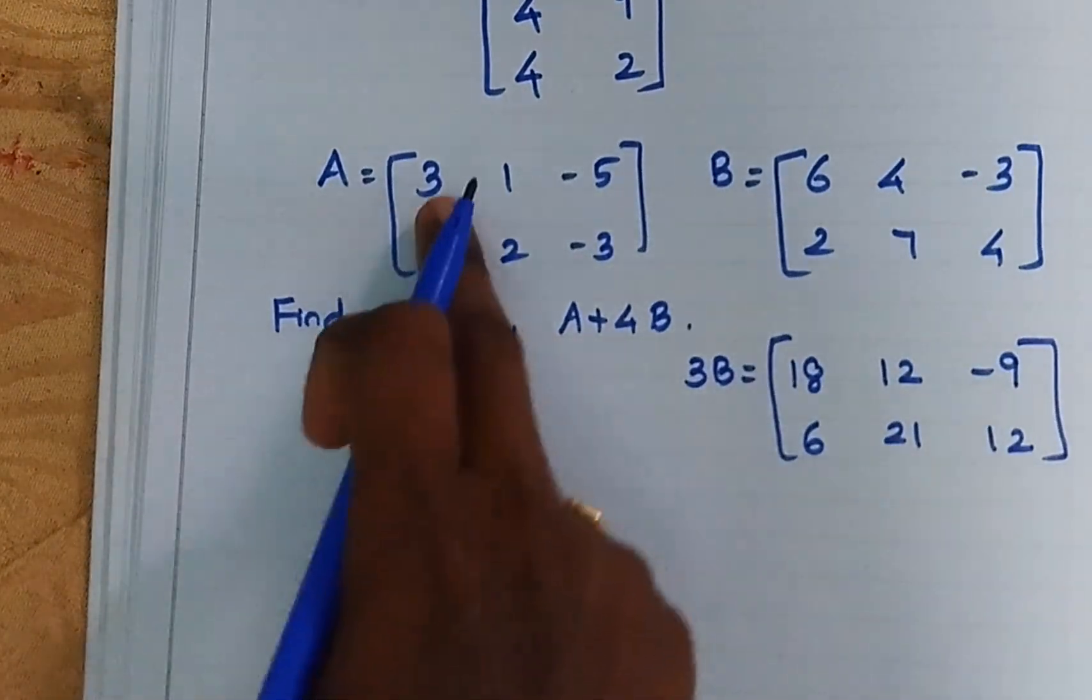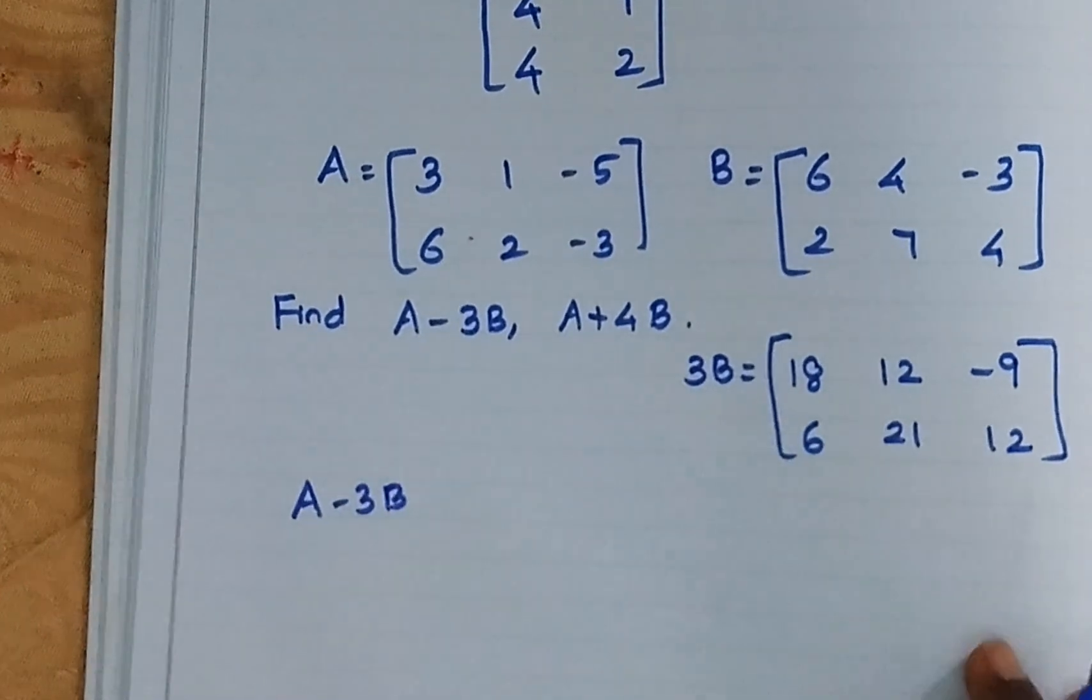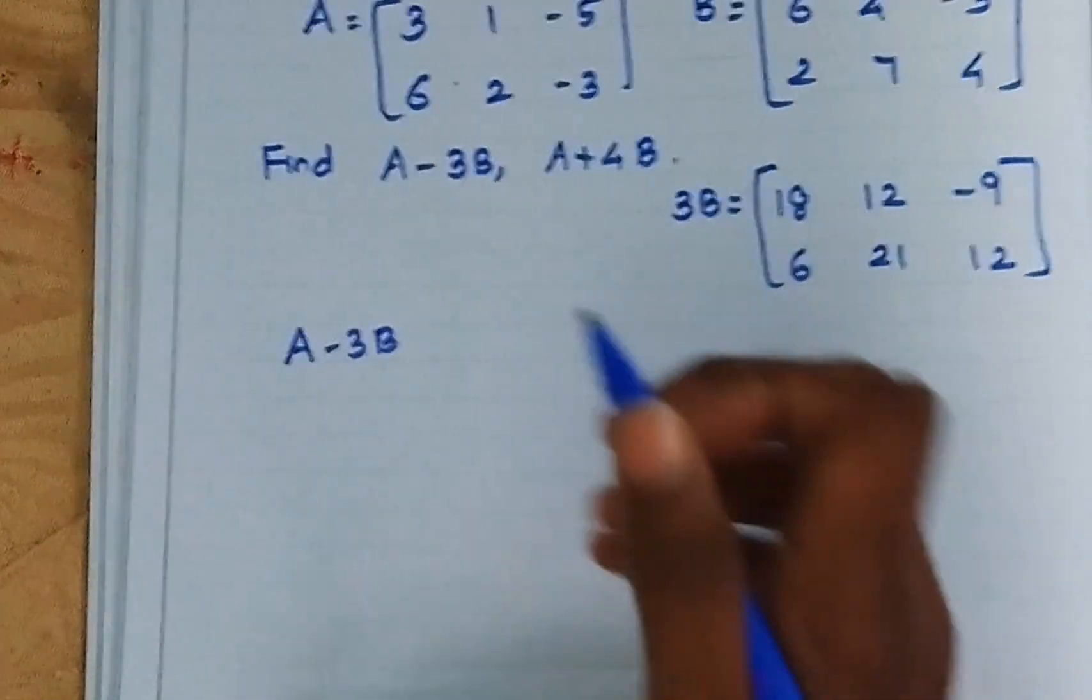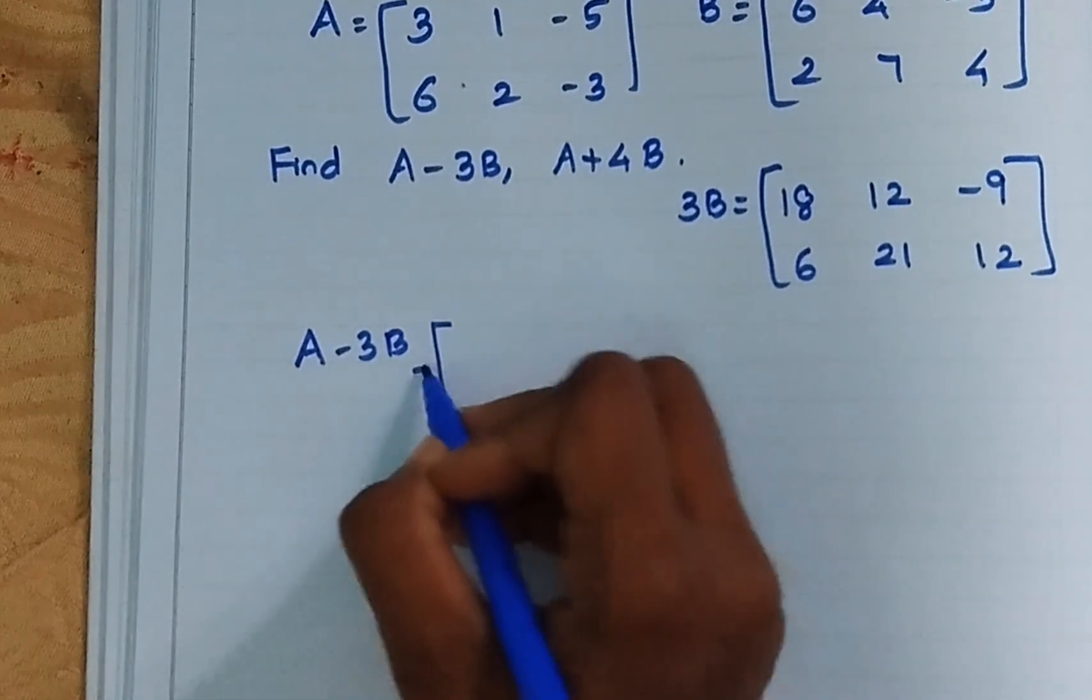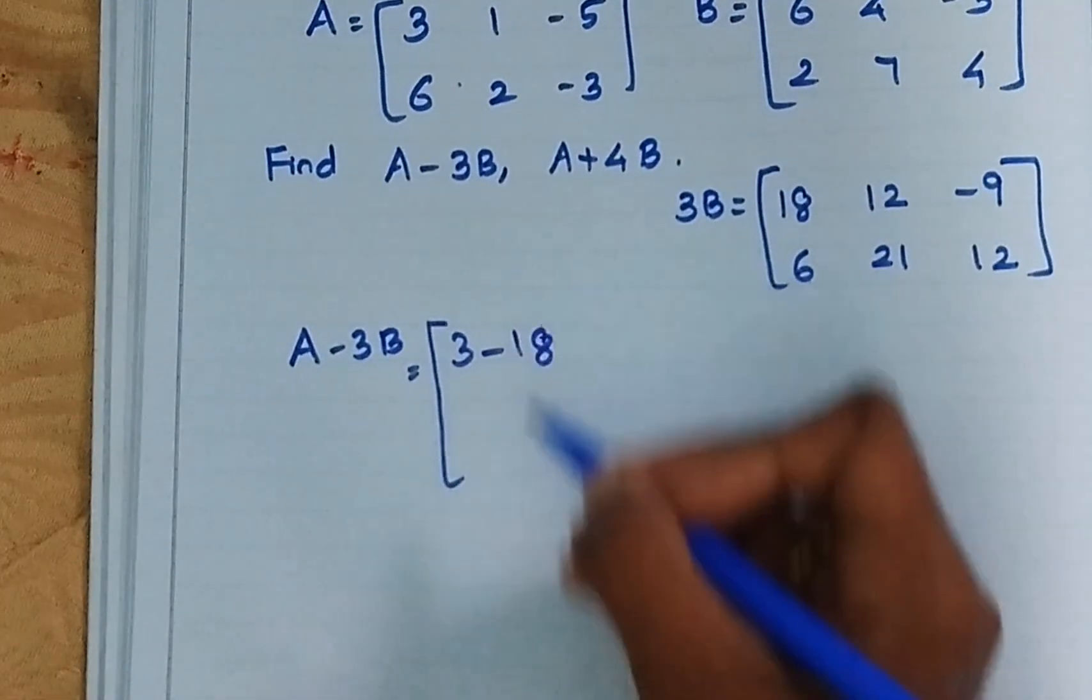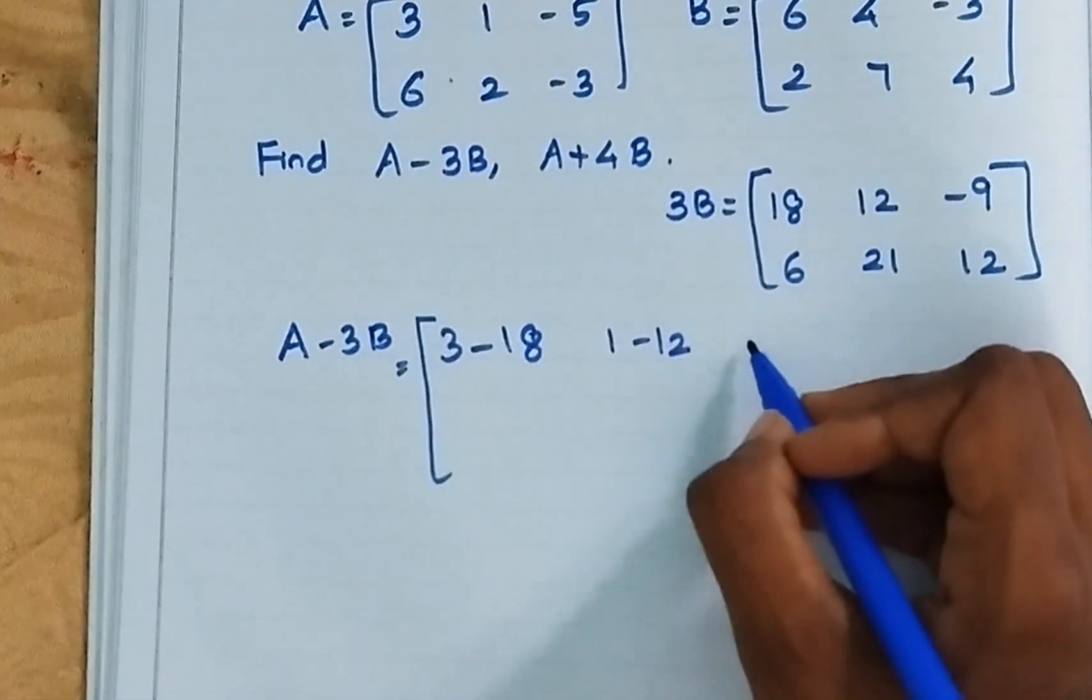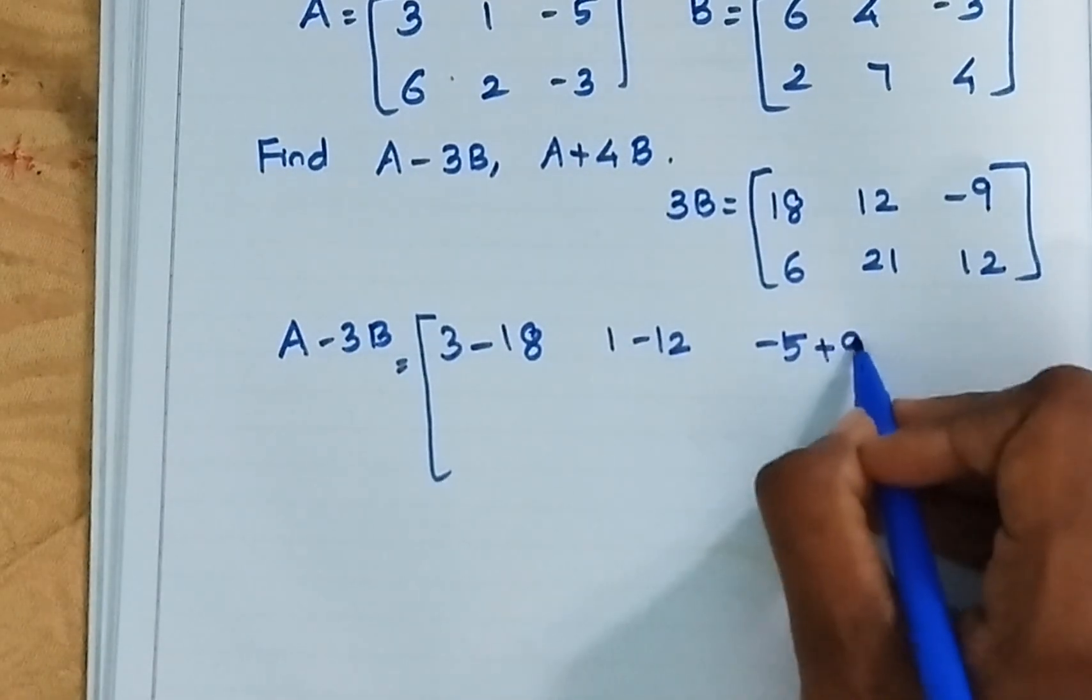Now A is there, 3B is ready. So that is A minus 3B. We are going to subtract A and 3B. So first element is A. That is 3 minus 18. Then 1 minus 12. Minus 5 plus 9.